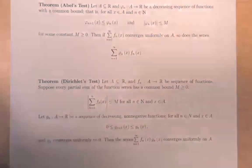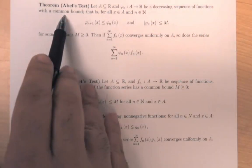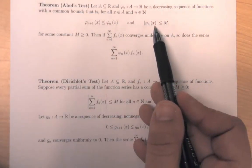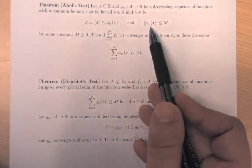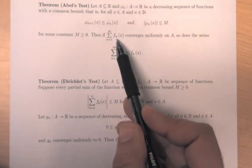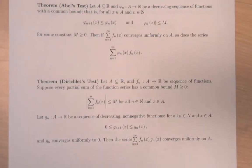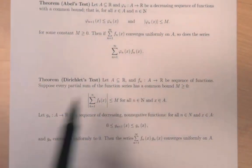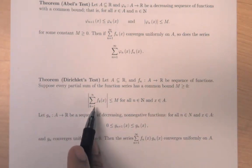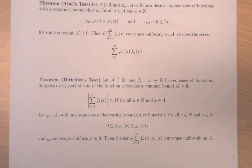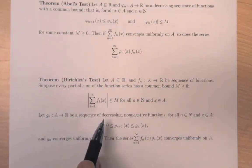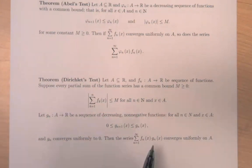Abel's test: if φ_n is a decreasing sequence of functions with a common bound — some number that bounds every function in the sequence — then if the series Σf_n converges uniformly, so does Σφ_n · f_n. Dirichlet's test says that if f_n is a sequence of functions and every partial sum is bounded for all n with a common bound, then if g_n is a sequence of decreasing non-negative functions, the series Σf_n(x) · g_n(x) converges uniformly.